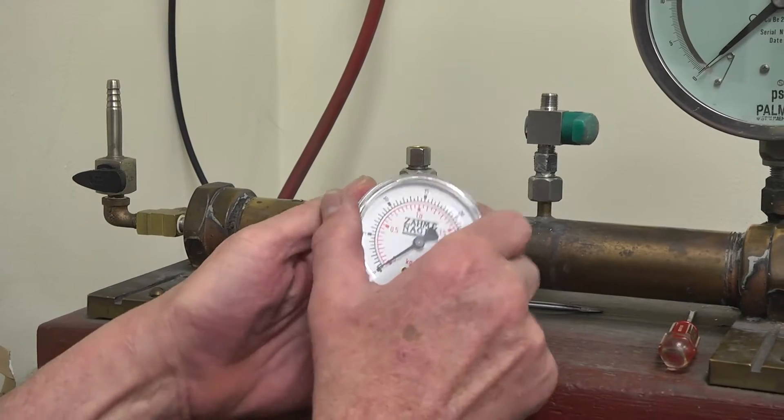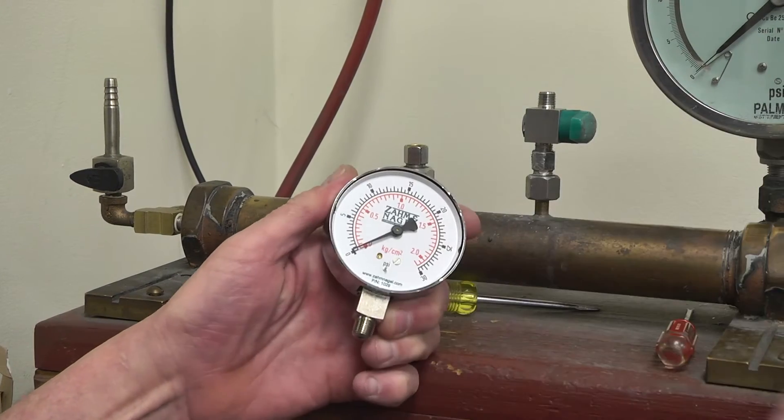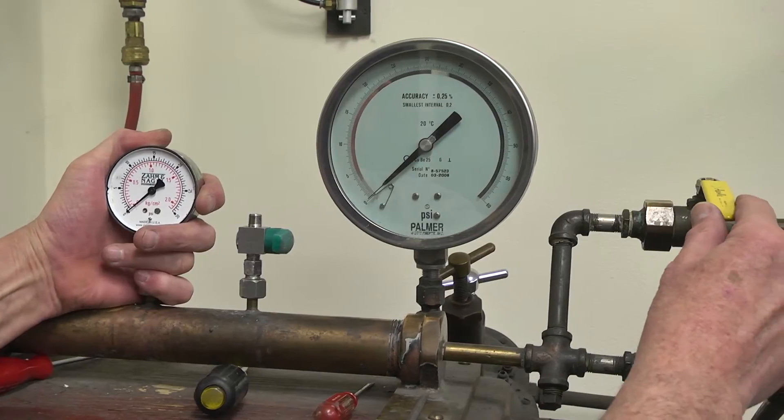Remove the plastic face cover by also unscrewing counterclockwise. Install the gauge on your gauge tester.